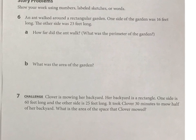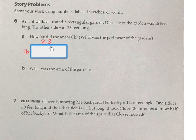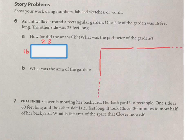Now we're getting into perimeter and area. Let's sketch this garden — it's 23 feet by 16 feet. The perimeter is the distance around, so you're going to add four numbers together. The area is the amount of space it takes up, so you need to multiply for that. Let's draw a model: 23 by 16.